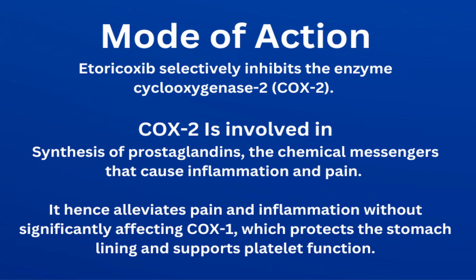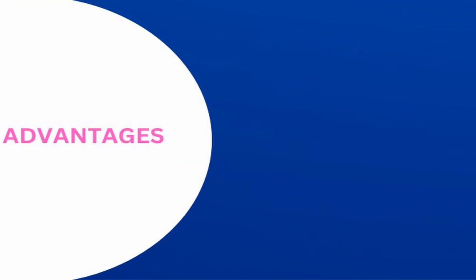The mode of action of etoricoxib is that it selectively inhibits the enzyme cyclooxygenase-2, commonly known as COX-2. This enzyme is involved in the synthesis of prostaglandins, which are chemical messengers that play a key role in inflammation and pain. By selectively inhibiting COX-2, etoricoxib reduces the production of these prostaglandins, thereby alleviating pain and inflammation without significantly affecting COX-1, which protects the stomach lining and supports platelet function.